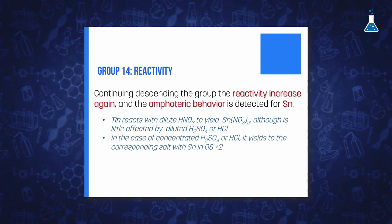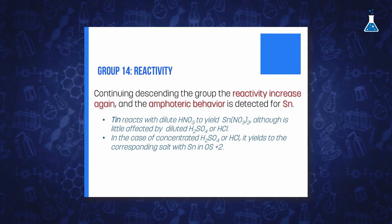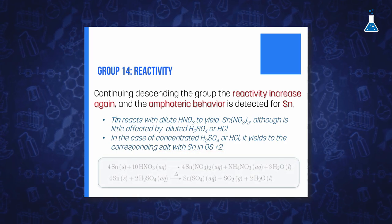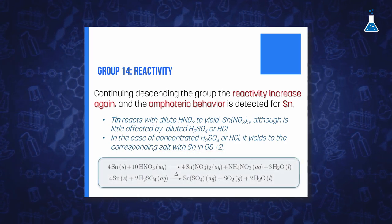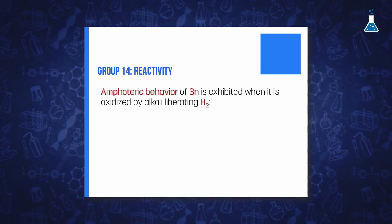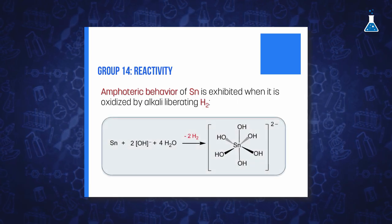However, when both acids are concentrated, tin is dissolved to form the corresponding salt of tin in oxidation state plus 2, that is, tin 2 chloride and tin 2 sulfate. The amphoteric behavior of tin is exhibited when it is oxidized by hot aqueous alkali as it is shown in the following equation.